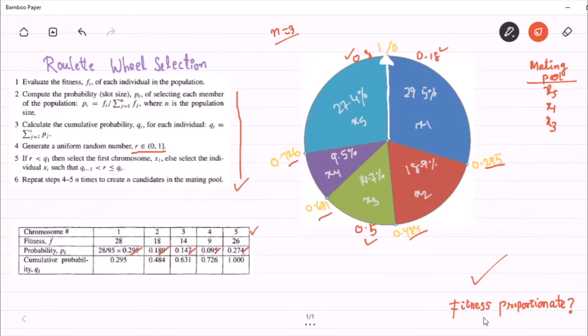Now, we have to make a point that what is fitness proportionate? This method is also known as fitness proportionate method, because for an individual, if the fitness value is much more high, then it is highly likely to be part of mating pool.